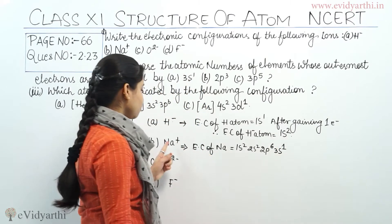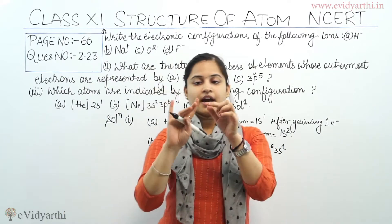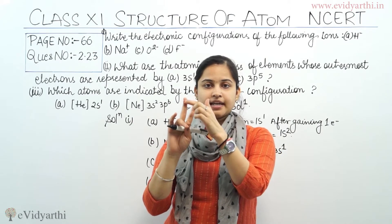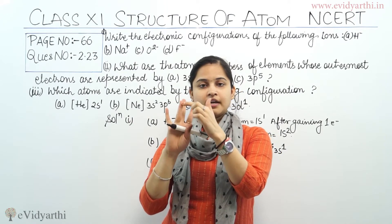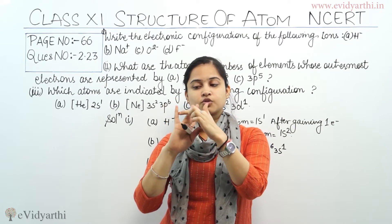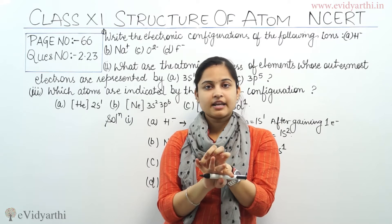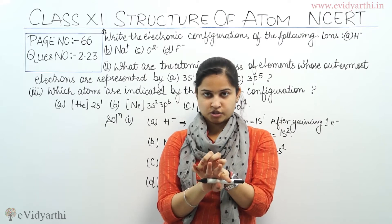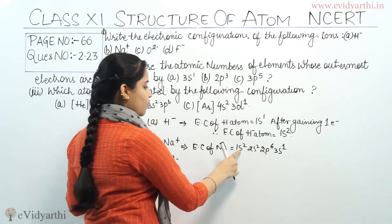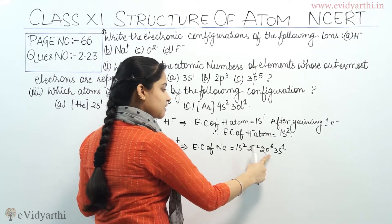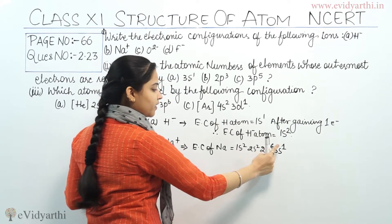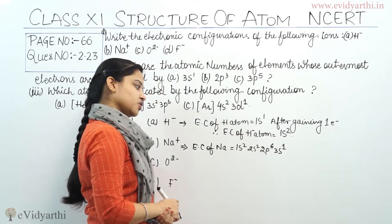Sodium comes at the 11th position, so the number of electrons is 11. Therefore: 1s2, 2s2, 2p6, 3s1 — counting: 2 plus 2 is 4, plus 6 is 10, plus 1 is 11. This electronic configuration is sodium.